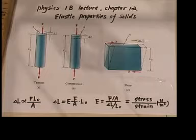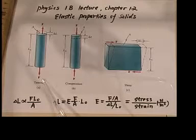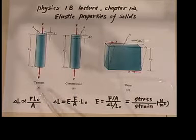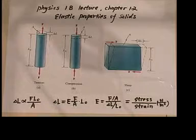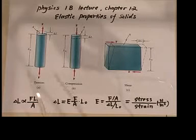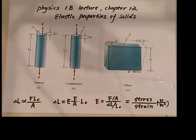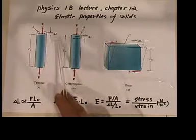Now our question is what will affect delta L? Apparently if we increase the force, delta L will be larger. On the other hand, if we increase the cross section area capital A, then delta L will be smaller under the same force because the thicker the rod, the harder to stretch. If we increase the initial length, initial length is doubled and delta L will be doubled.